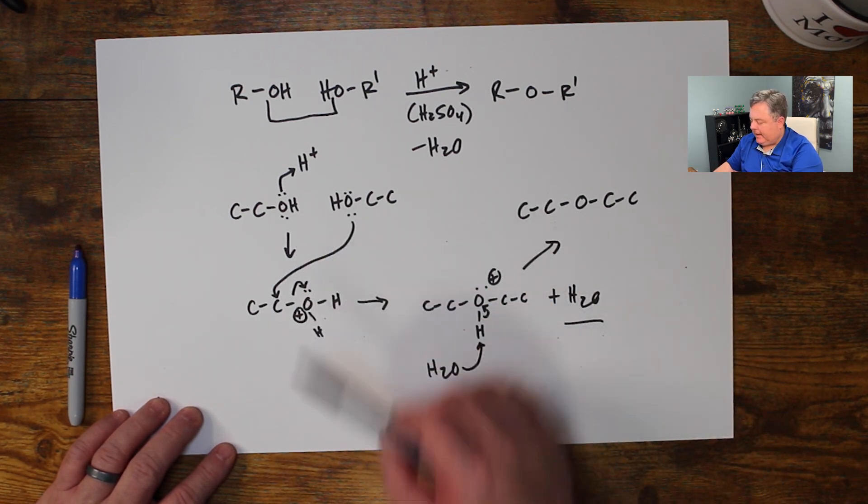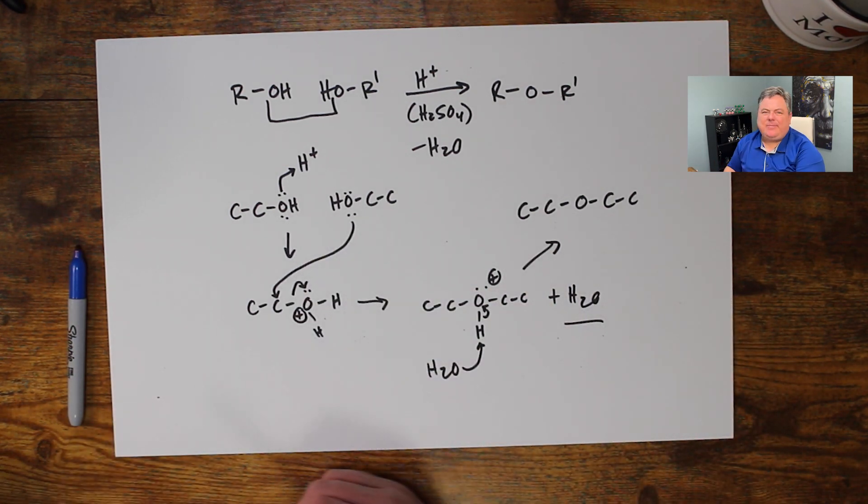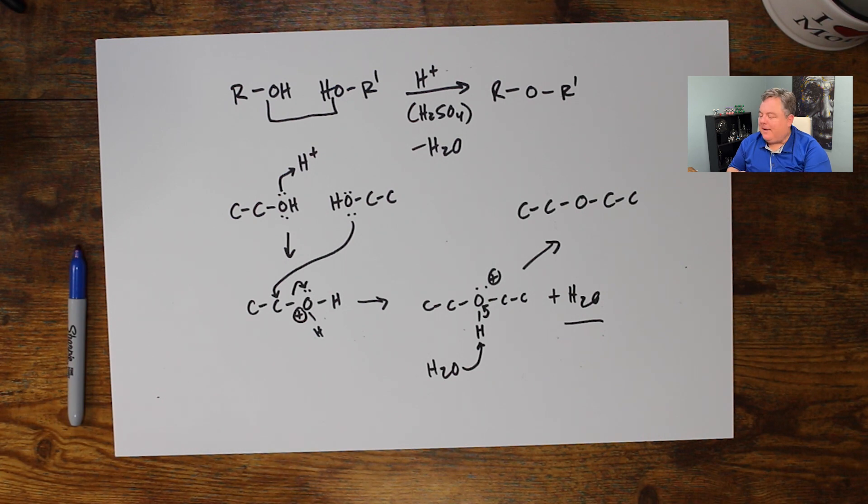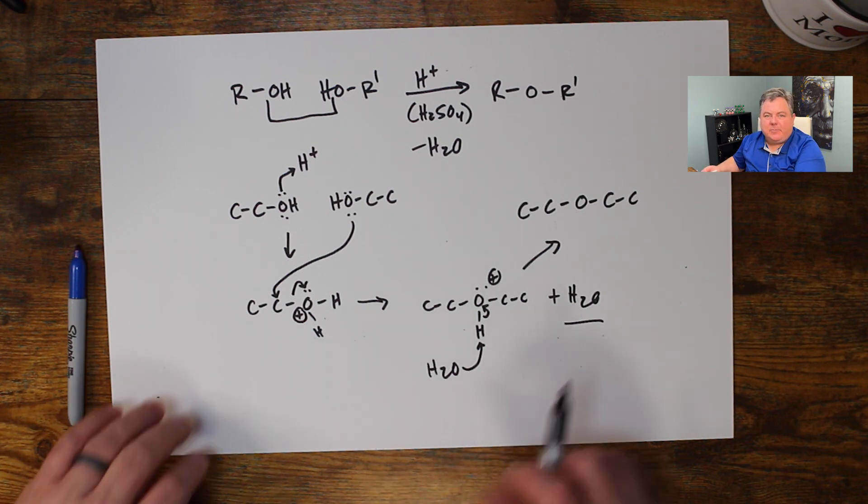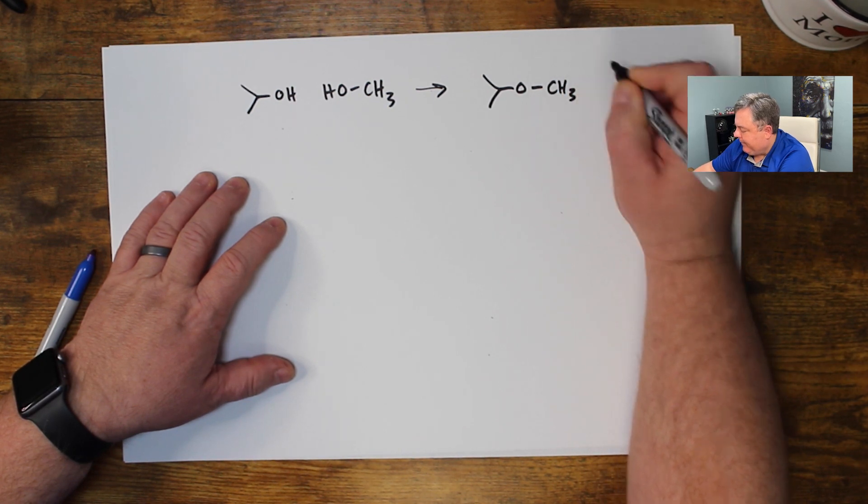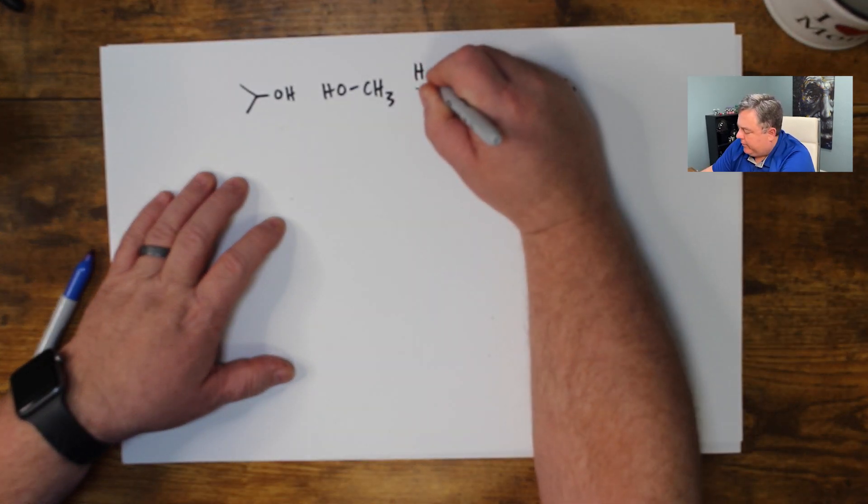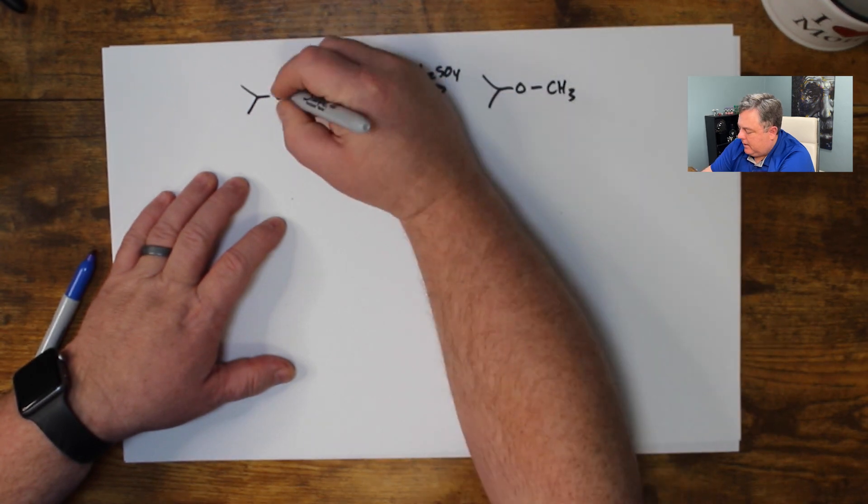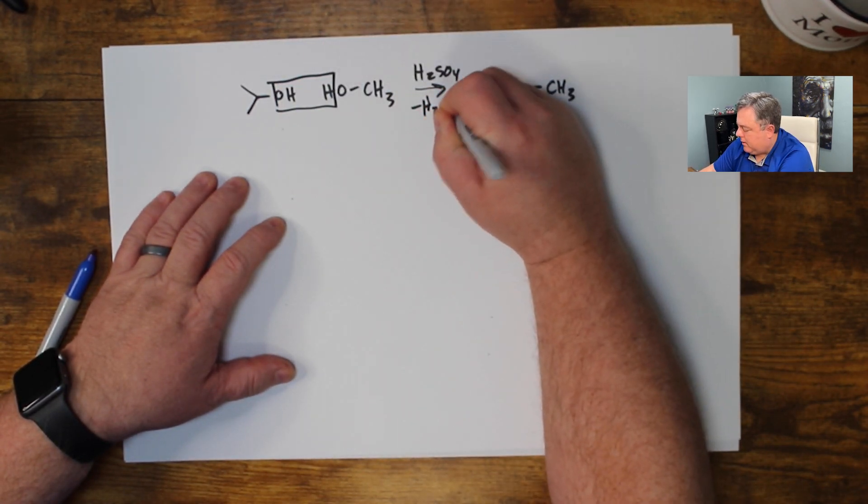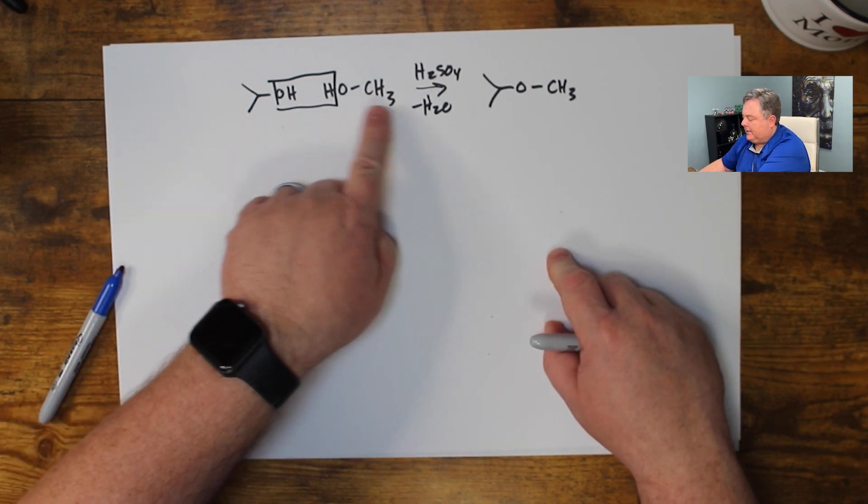That makes a very good leaving group. So this other molecule can backside attack. That great water leaving group could leave. So now I have carbon, carbon, oxygen. It's got a hydrogen and two carbons on it. So it's got a positive charge on the oxygen, plus water was my byproduct. And that's stable, neutral, very good leaving group.